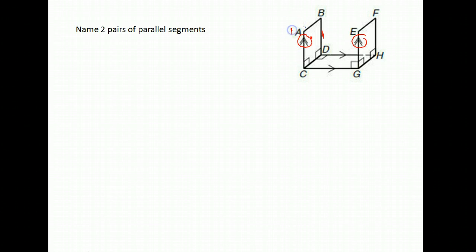We also visually can look at these and see, yeah, those look like they are parallel. They're on the same plane. They're both on the front side of this figure and they're both pointing in exactly the same direction. So two pairs of parallel segments. I can say that AC is parallel to EG.